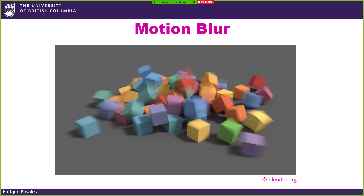We were talking about depth of field, motion blur, and all the cool effects we can do with path tracing. Almost every realistic effect a real camera can produce is achievable in path tracing by just sending a lot of rays. We can get motion blur, depth of field, glossy reflections, and things like that. If you want a very high quality image, you just need to increase the number of rays.